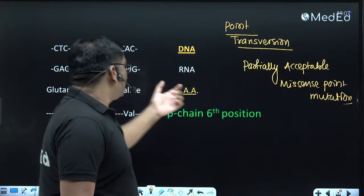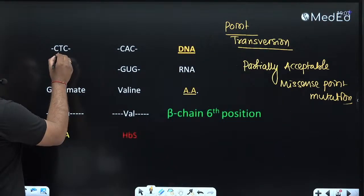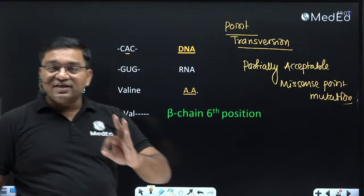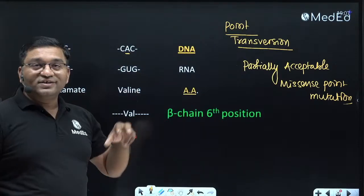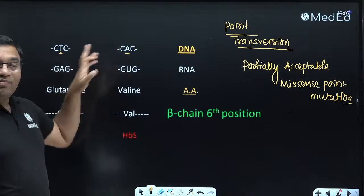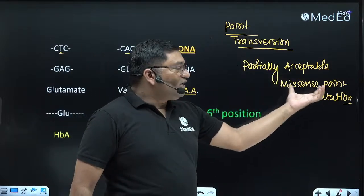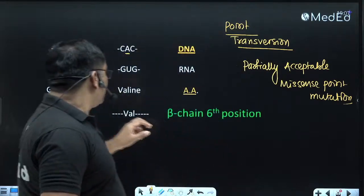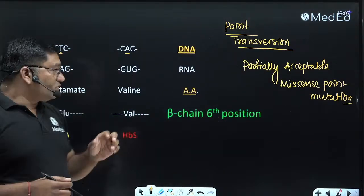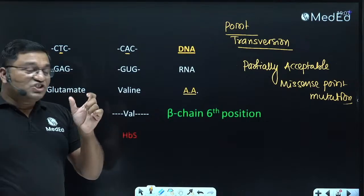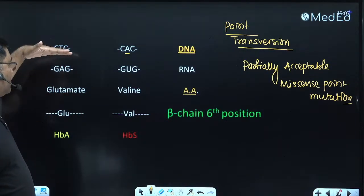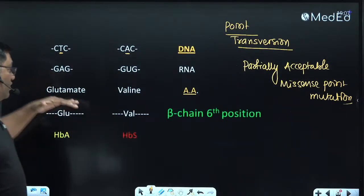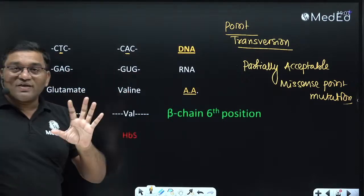It is a type of point mutation where, in the normal case, thymine is replaced by adenine in the DNA — a transversion where pyrimidine is replaced by purine. What does missense point mutation mean? It means there is a change in the codon. In the RNA, CTC becomes GAG, and CAC in DNA becomes GUG in RNA. So GAG is replaced by GUG — there is a change in the codon.